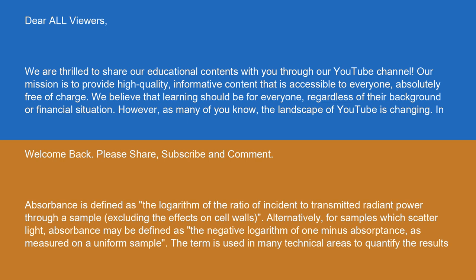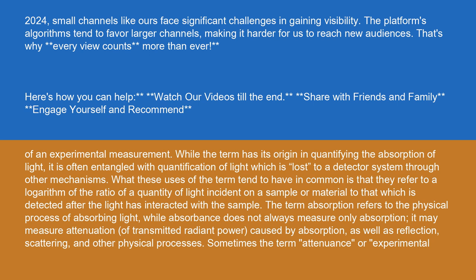Absorbance is defined as the logarithm of the ratio of incident-to-transmitted radiant power through a sample, excluding the effects on cell walls. Alternatively, for samples which scatter light, absorbance may be defined as the negative logarithm of 1 minus absorptance, as measured on a uniform sample.